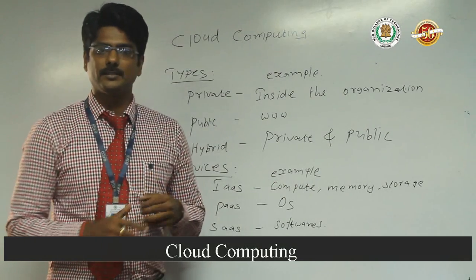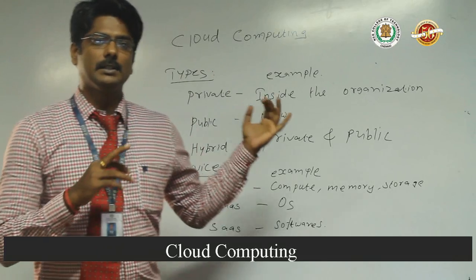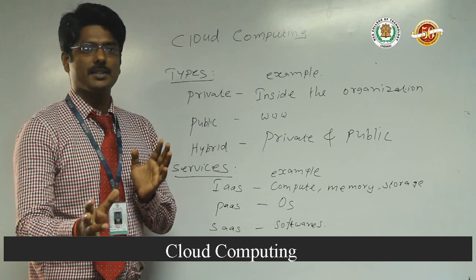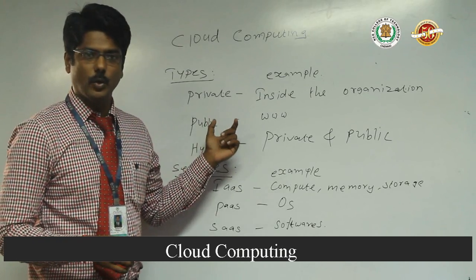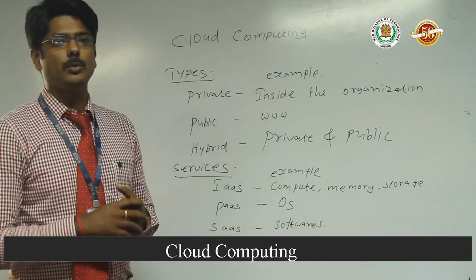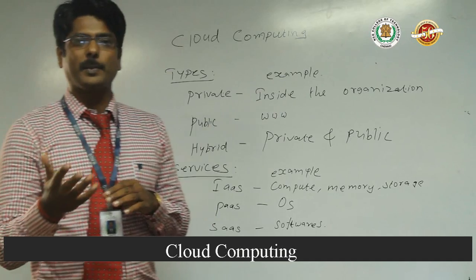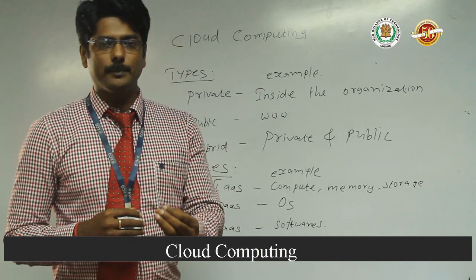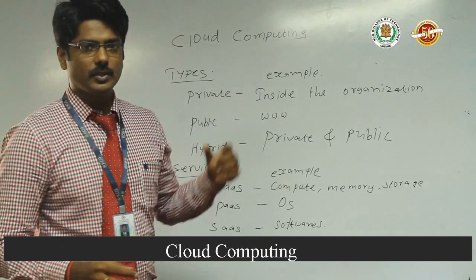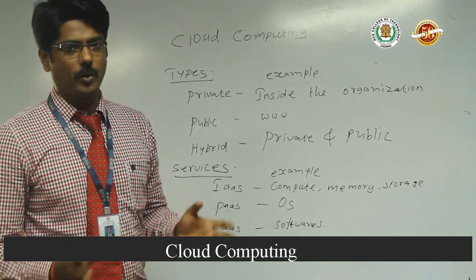Next, we are going to discuss the different types with examples. If you want to do all the operations inside a single organization, you can go with the private cloud. If you want to do operations worldwide, you use the public cloud. Next, the combination of both private and public — most private clouds are not fully utilized 24 into 7, so if you want to use that private cloud combined with the public cloud, that concept is called hybrid cloud computing.